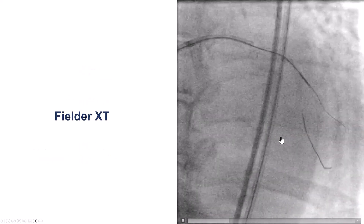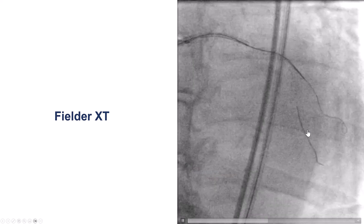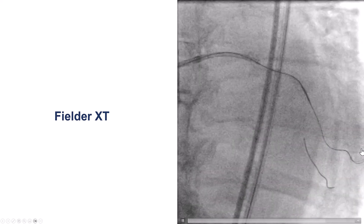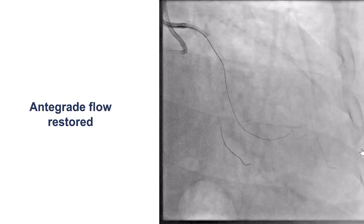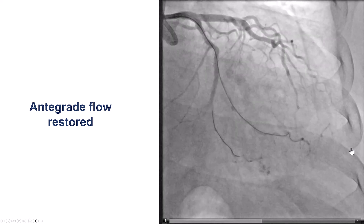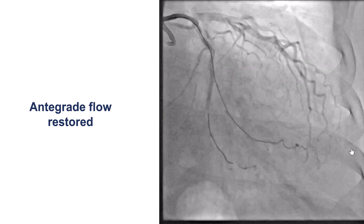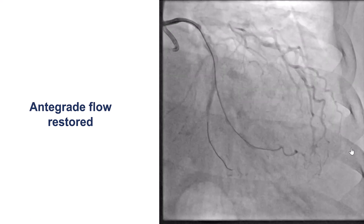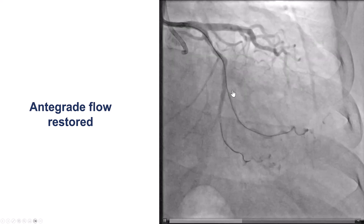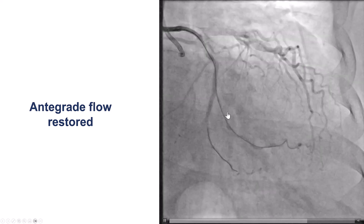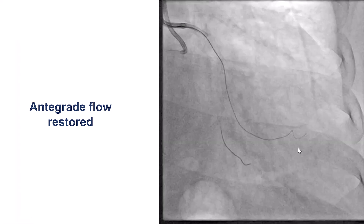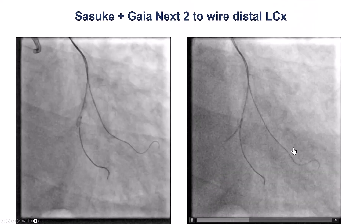We took a polymer-jacketed wire again — a Fielder XT guidewire — which created a knuckle and pushed it further down. After doing that, we were able to restore antegrade flow into the branch. Essentially, we performed the STAR technique: using the STAR, we were able to cross and restore antegrade flow.